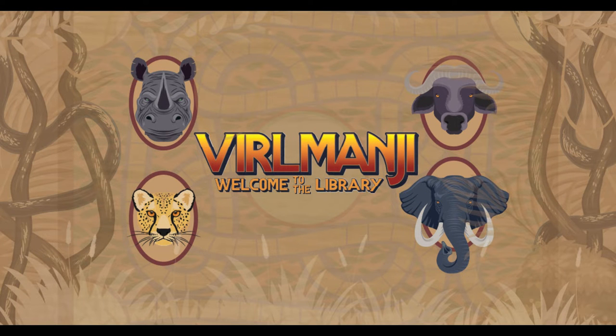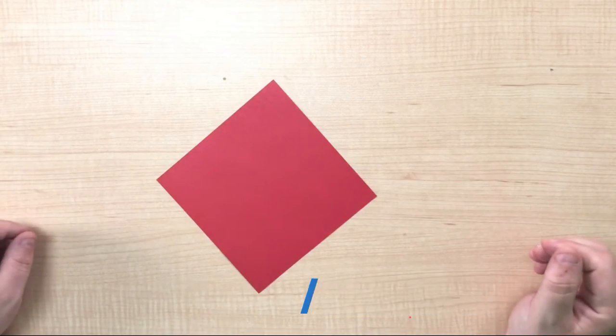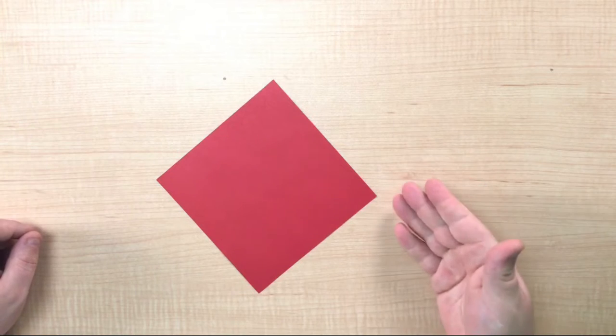Welcome to the Verlmanji Summer Teen Challenge Origami Parakeet Tutorial. Begin by having your paper in a diamond shape.